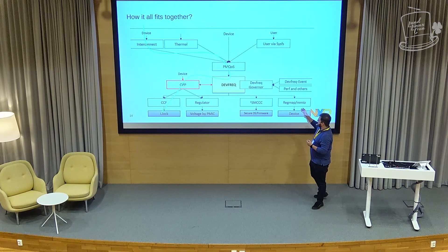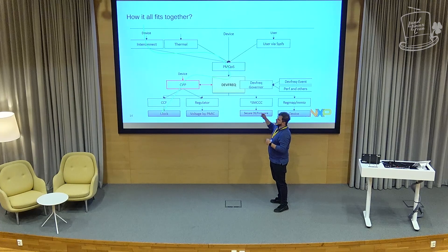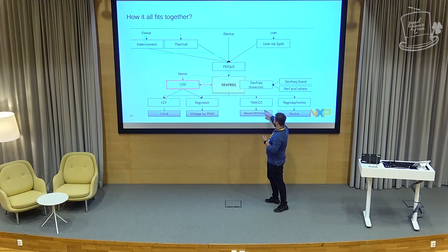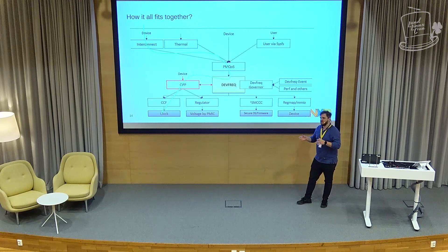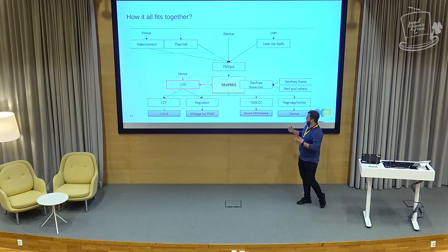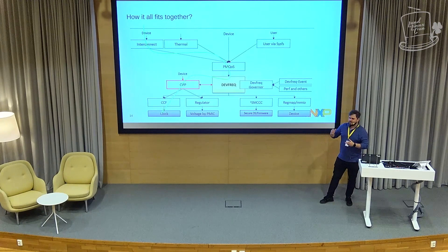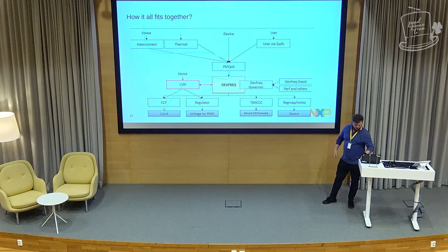There's another case I forgot to add. The DDRC is also a DevFreq device, used by the interconnect in our solution through PMQOS. But it's not going through CCF — it's going through SMCCC, because we want to do the clock changes in ATF. You're not supposed to control the DDR clocks from kernel; you're supposed to do that from a secure environment, ATF.